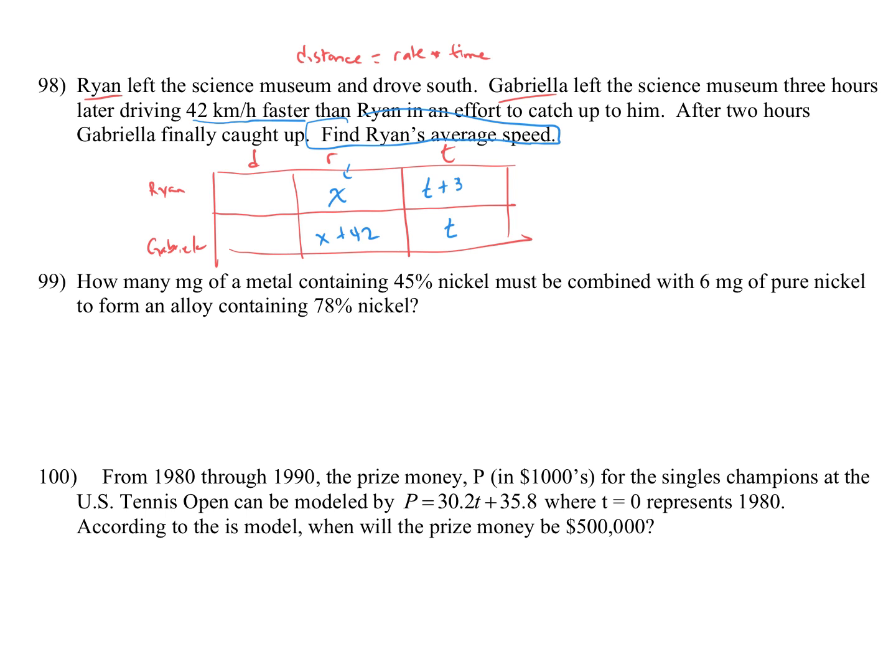Then it says after two hours Gabriella finally caught up. So when time for Gabriella is two hours, when t is two, when she's been traveling for two hours, the distances for Gabriella and Ryan are the same. They're caught up with each other. So if I write expressions for Ryan's distance, which is x times t plus three, and Gabriella's distance, which is x plus 42 times t, when time is two those are equal to each other. So when t is two, these are equal to each other.